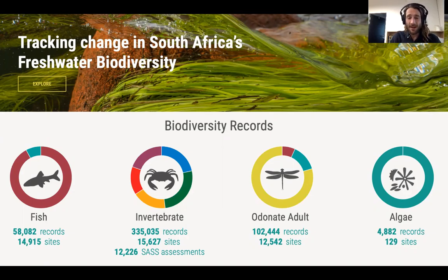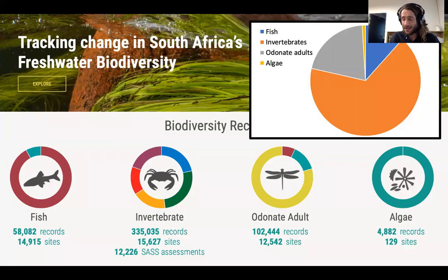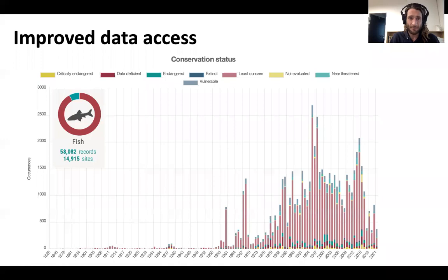The data are packaged by modules, including fish, invertebrates, adult odonates, and algae. The vast majority of the data — about two-thirds — being aquatic invertebrates, but also substantial quantities of fish and adult odonate data, and a smaller proportion of algae data.